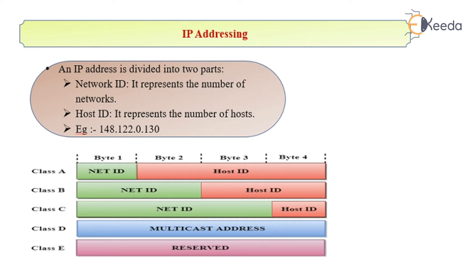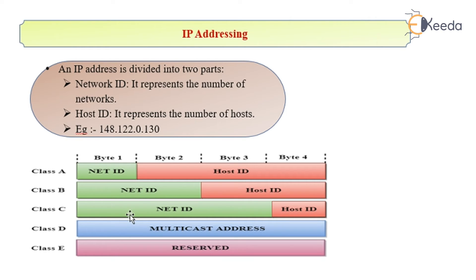In class A, the first byte is used to represent the network ID, while the next three bytes are used to represent the host ID. In class B, the first two bytes represent the network ID and the next two bytes represent the host ID. In class C, the first three bytes are used for network identification and the last byte is used for host identification.